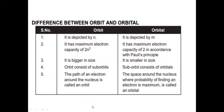Differences between orbit and orbital: orbit is represented by n; orbital by m. Maximum electron capacity of an orbit is 2n², while an orbital can hold only 2 electrons. Orbit is bigger in size; orbital is smaller. Orbit consists of sub-orbits; sub-orbits consist of orbitals. Orbit has only a spherical shape, while orbitals have different shapes — spherical, dumbbell, double-dumbbell, etc. An orbit is the imaginary path of an electron around the nucleus; an orbital is the space around the nucleus where the probability of finding an electron is maximum.